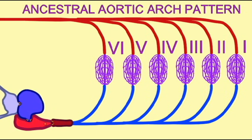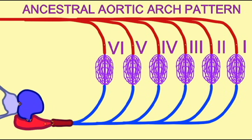In fish, the heart pumps blood through the ventral aorta to a series of aortic arches which serve as the gills. In the gills, oxygen enters the blood, and this blood then returns into the dorsal aorta and is distributed throughout the body.